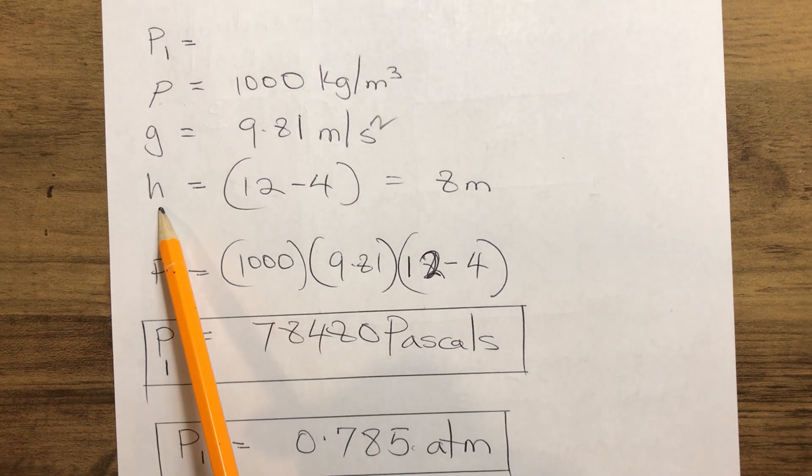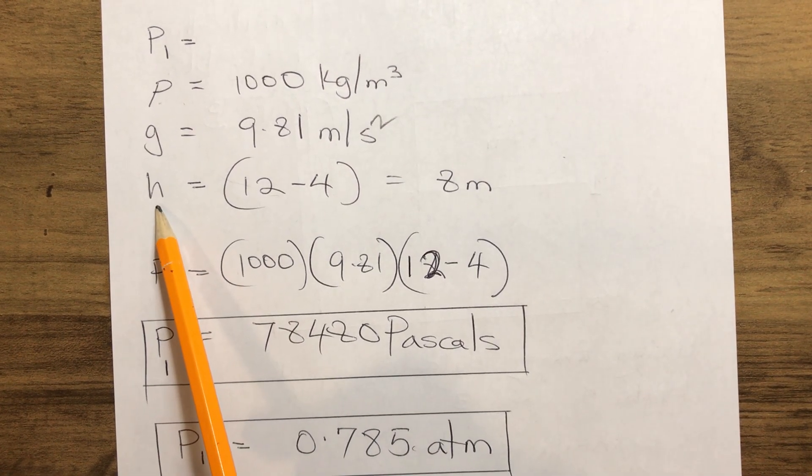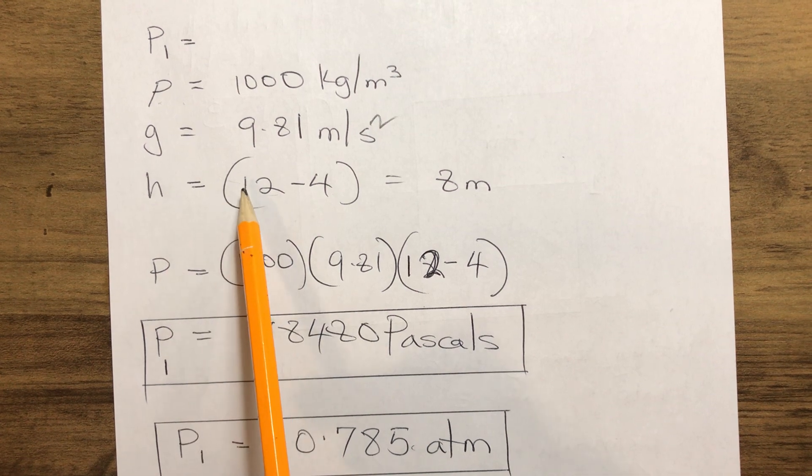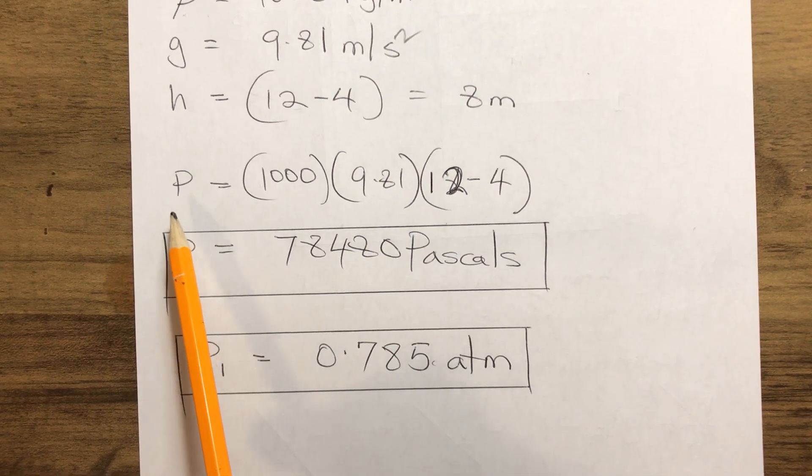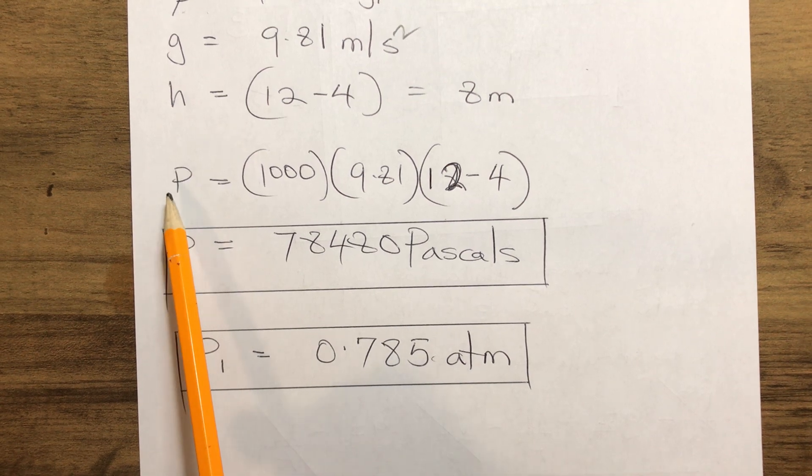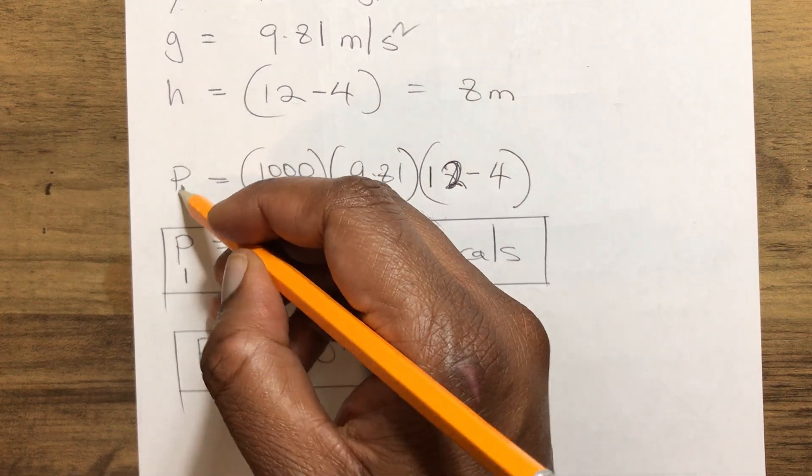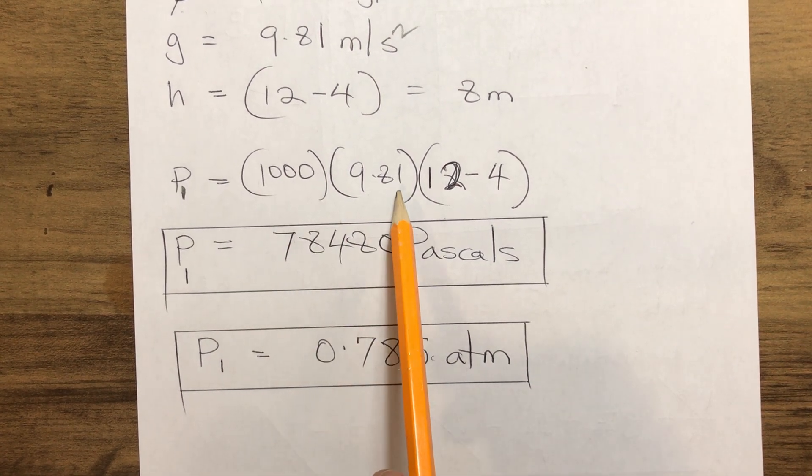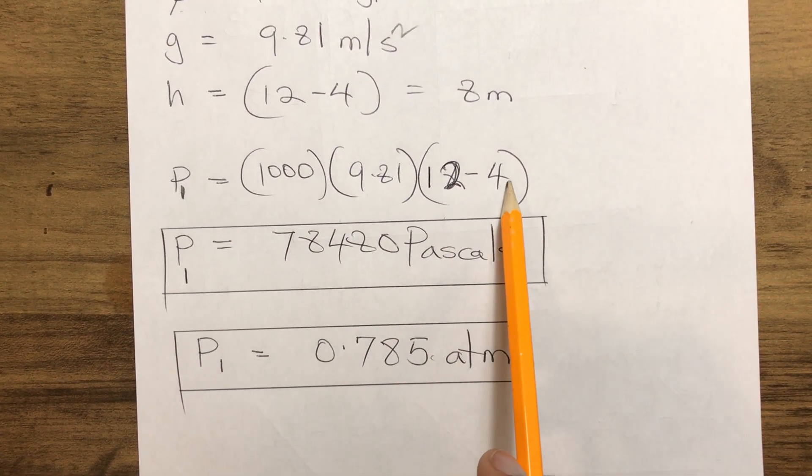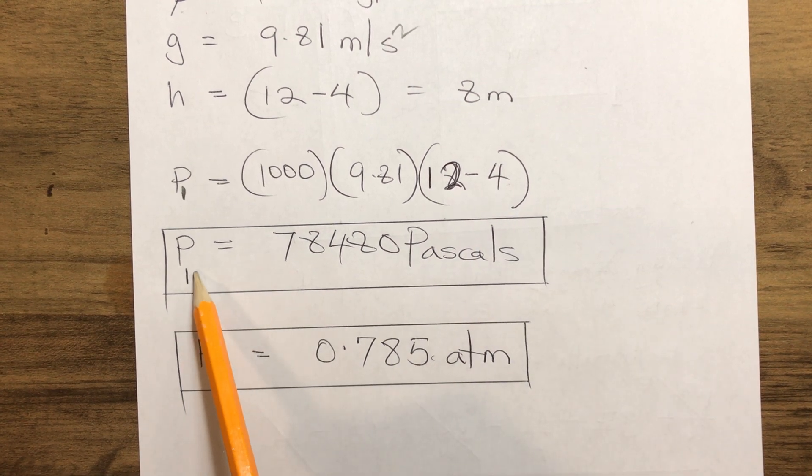Our height, the differential height which we are given, 12 minus 4, gives us 8 meters. So therefore our P1 equals 1000 multiplied by 9.81 multiplied by (12 - 4), which gives us P1 = 78,480 Pascals.